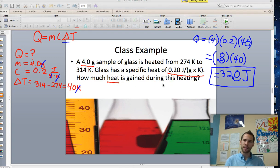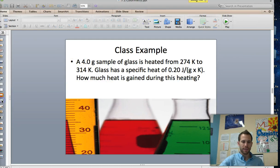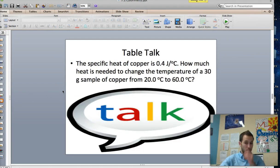And that's how you solve any specific heat problem. This is for all calorimetry. Now I want you guys to give this one a shot right here, where you're being asked to find the heat needed to change the temperature of a 30 gram sample of copper from 20 degrees Celsius to 60 degrees Celsius. And the specific heat of copper is 0.4 joules per degree Celsius.